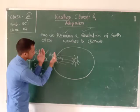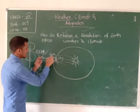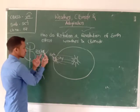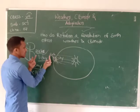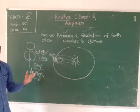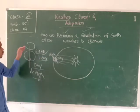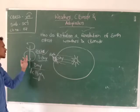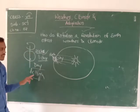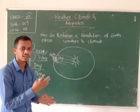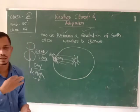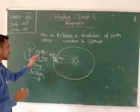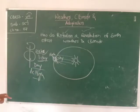After the Earth rotates, one side comes into sunlight and feels day, while the other side goes into darkness and feels night. So we observe day and night because the Earth always rotates about its axis. Half of the day we feel daytime and the other half we feel nighttime.